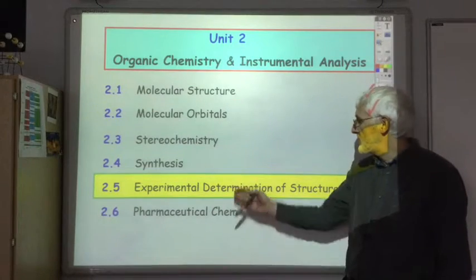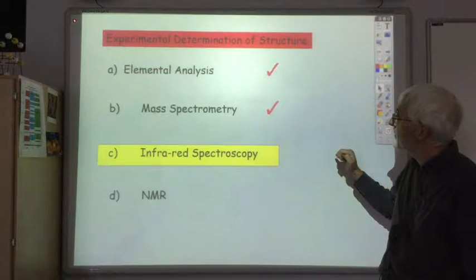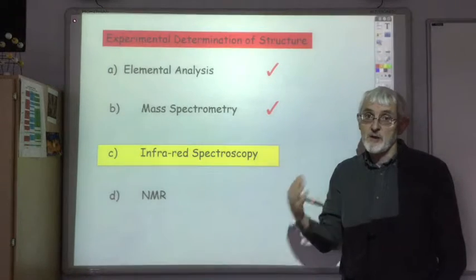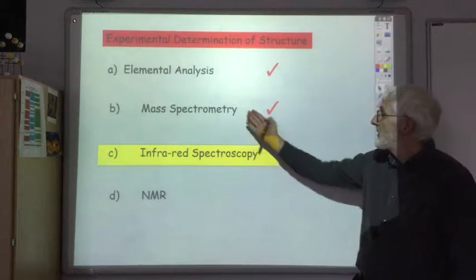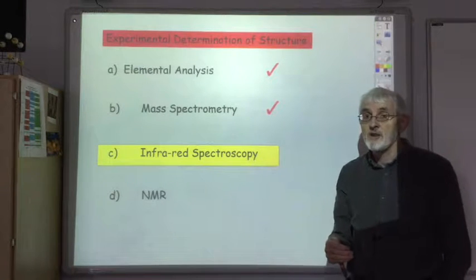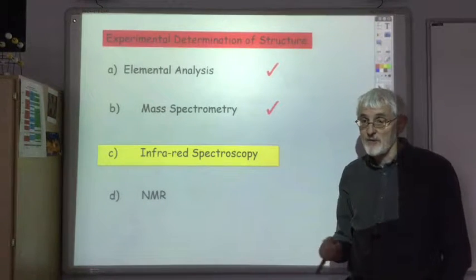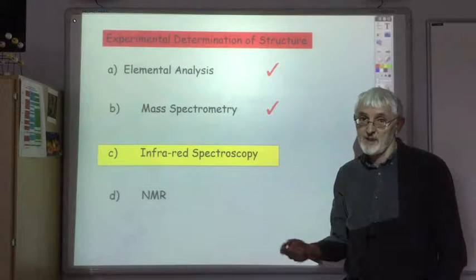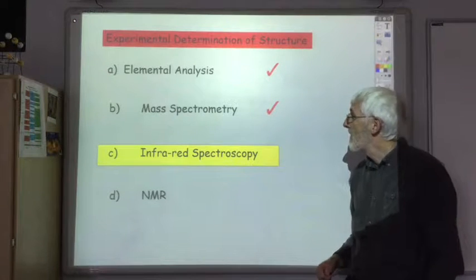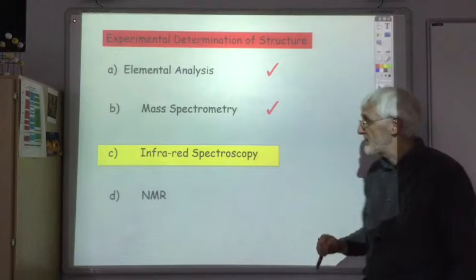We're going to continue with the experimental determination of structure. We've done the elemental analysis, which gives us an empirical formula, then carried out mass spectrometry, which can turn that empirical formula into a molecular formula, and also identify the existence of important fragments. For example, a peak at 77 would suggest the presence of a phenyl group. So we now want to look at what information we can get from Infrared Spectroscopy.